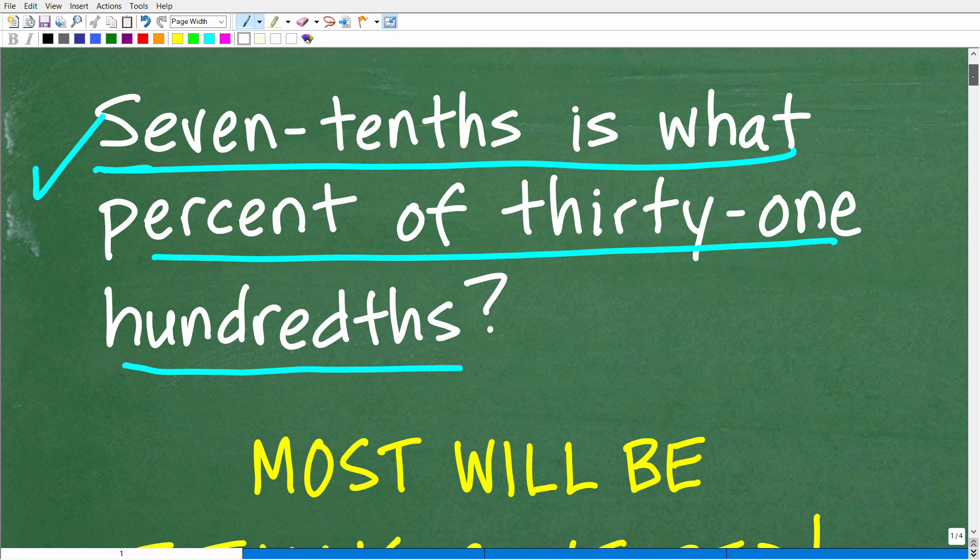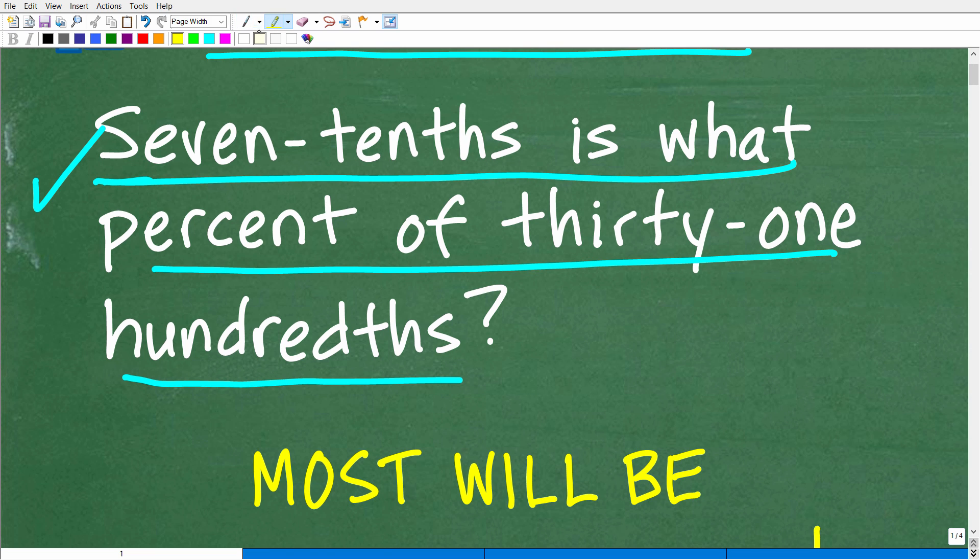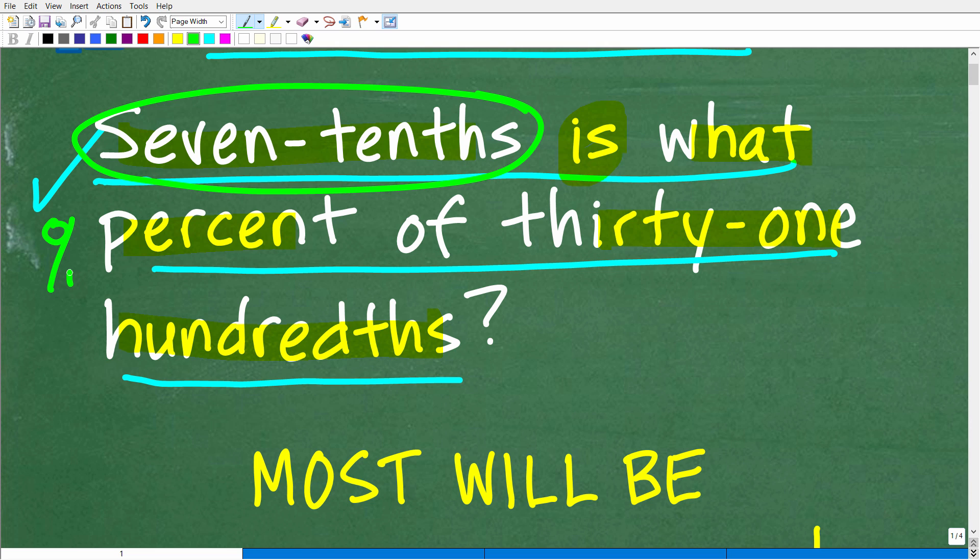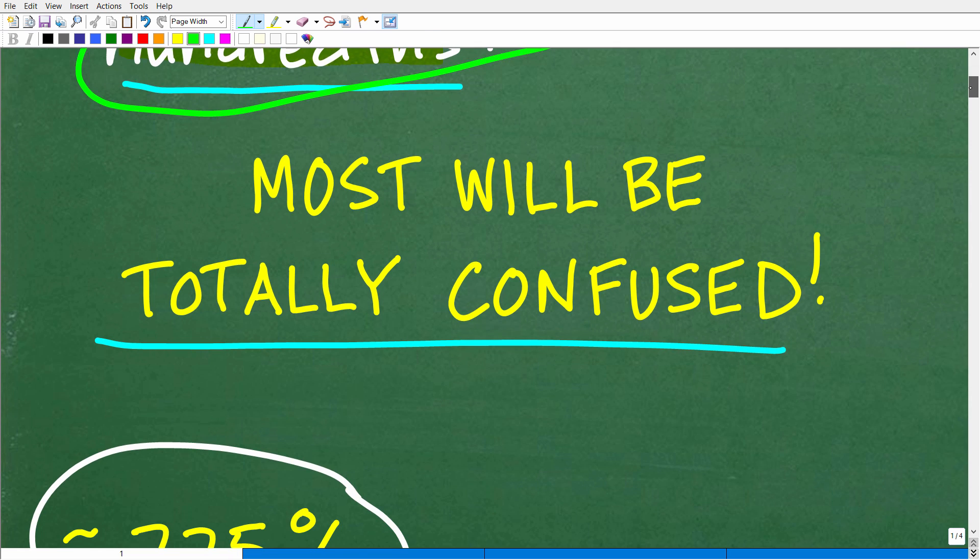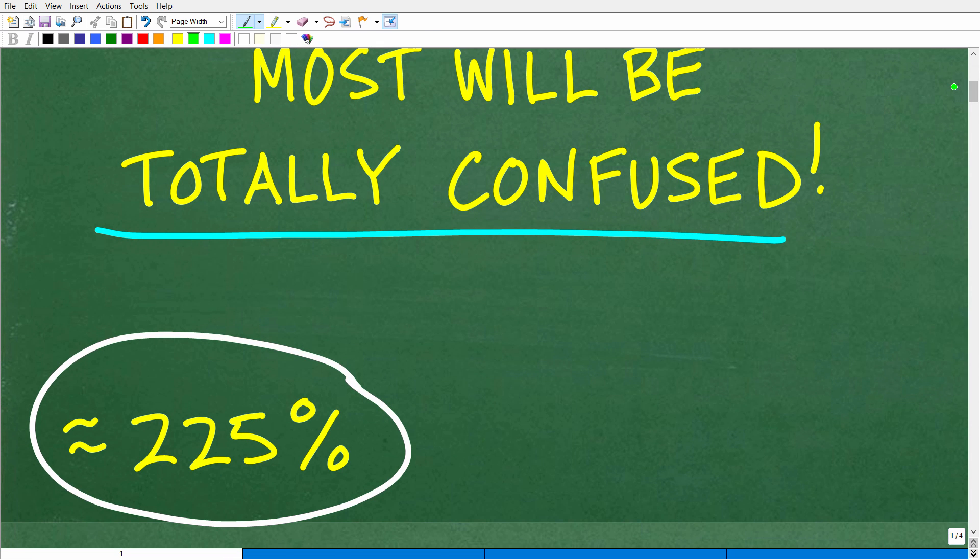Now, the question is: seven-tenths is what percent of 31 hundredths? What we have here is some value, some number is what percent of another number. These numbers are written out and we're going to have to do a little bit of work to figure this out. But it's not that difficult because most of you probably learned this one time or another.